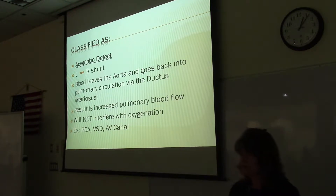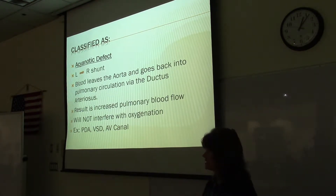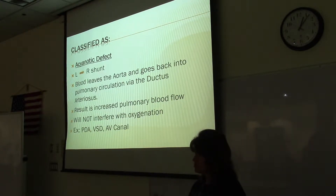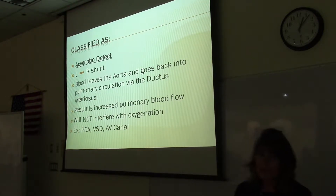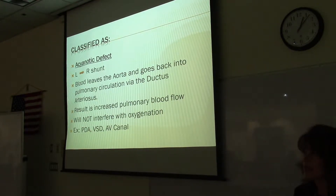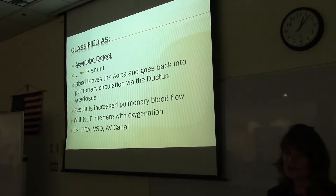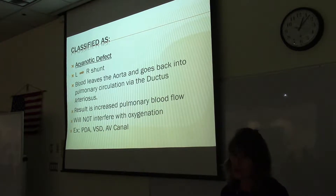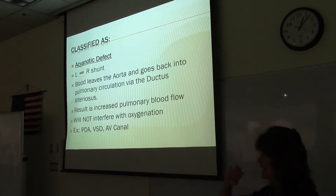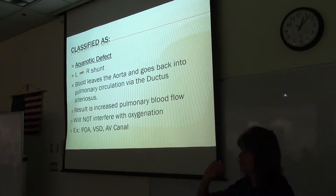However, if the defect causes blood to be shunted past the lungs and not pick up oxygen, and the oxygen saturation is going to be lower than normal, then we would call that defect a cyanotic heart defect. With an acyanotic heart defect, there's shunting of blood from the left back to the right. Blood leaves the aorta and goes back into pulmonary circulation via the ductus arteriosus — that connection between the aorta and the pulmonary artery.